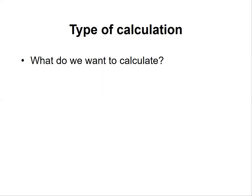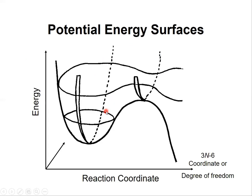In this lecture, we are speaking about what's called the type of calculation. What's meant by this in a simple way is: what do you want the software to do? What do you want the software to calculate? Before proceeding about different types of calculations, let's have a look at the potential energy surface.